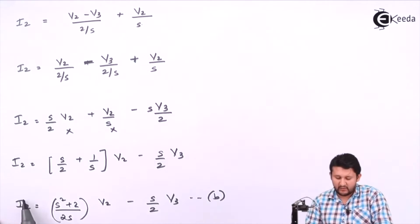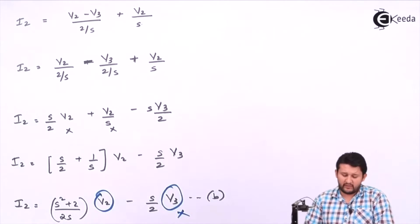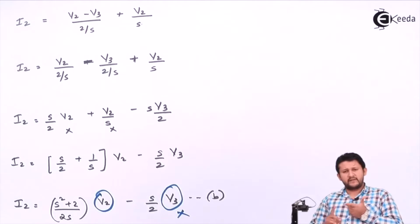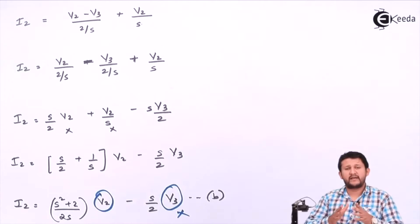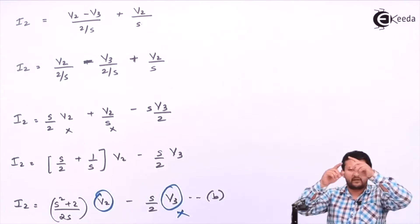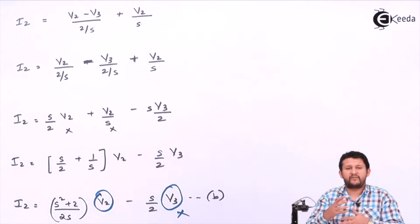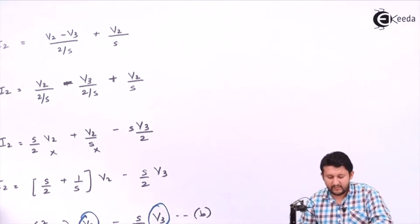So your Y parameter set will require I2 in terms of V1 and V2. But our equation still contains V3. For Y parameters, I1 and I2 must be expressed purely in terms of V1 and V2. So V3 must be expressed as a combination of V1 and V2, giving us three options. We need to apply KCL at the V3 node to eliminate that variable.